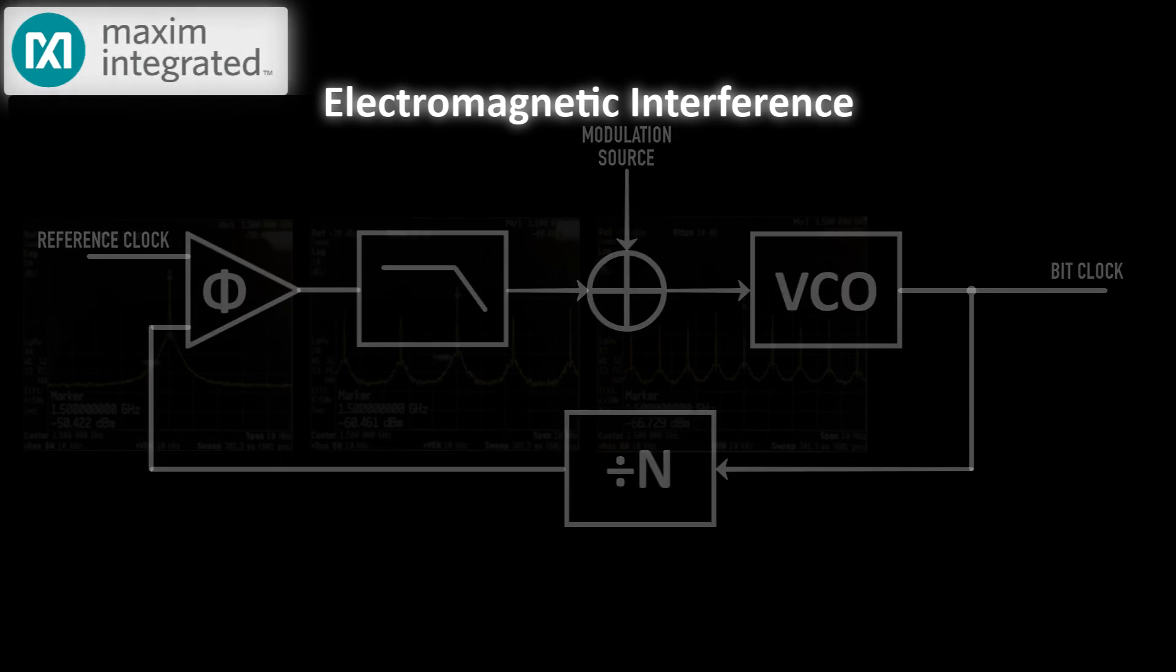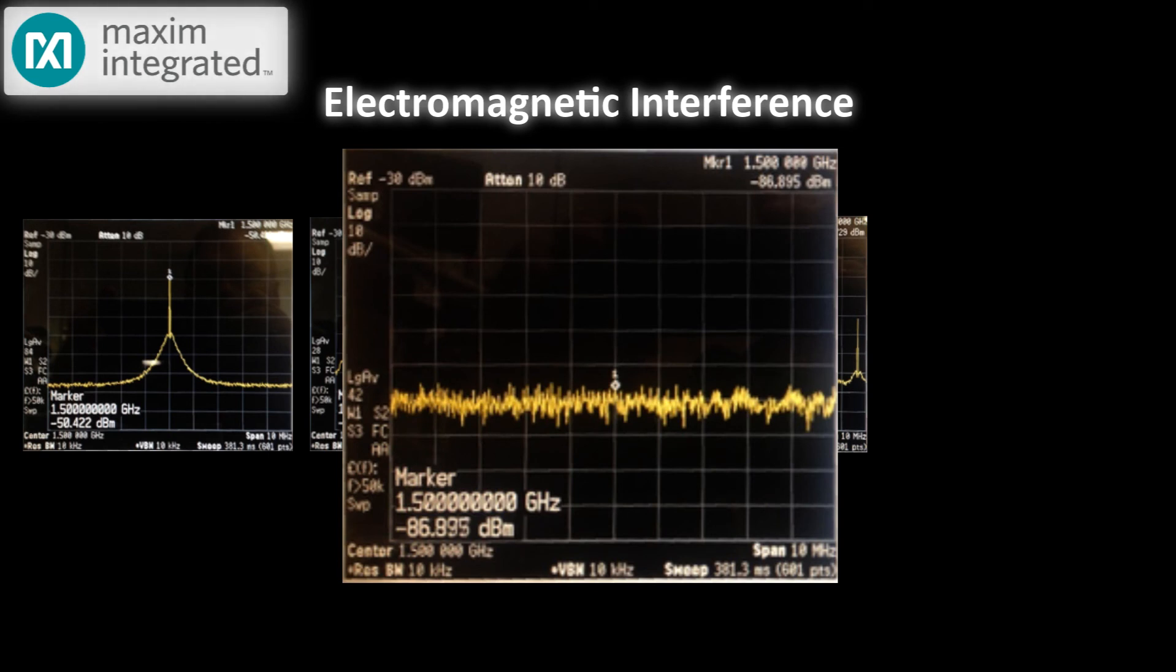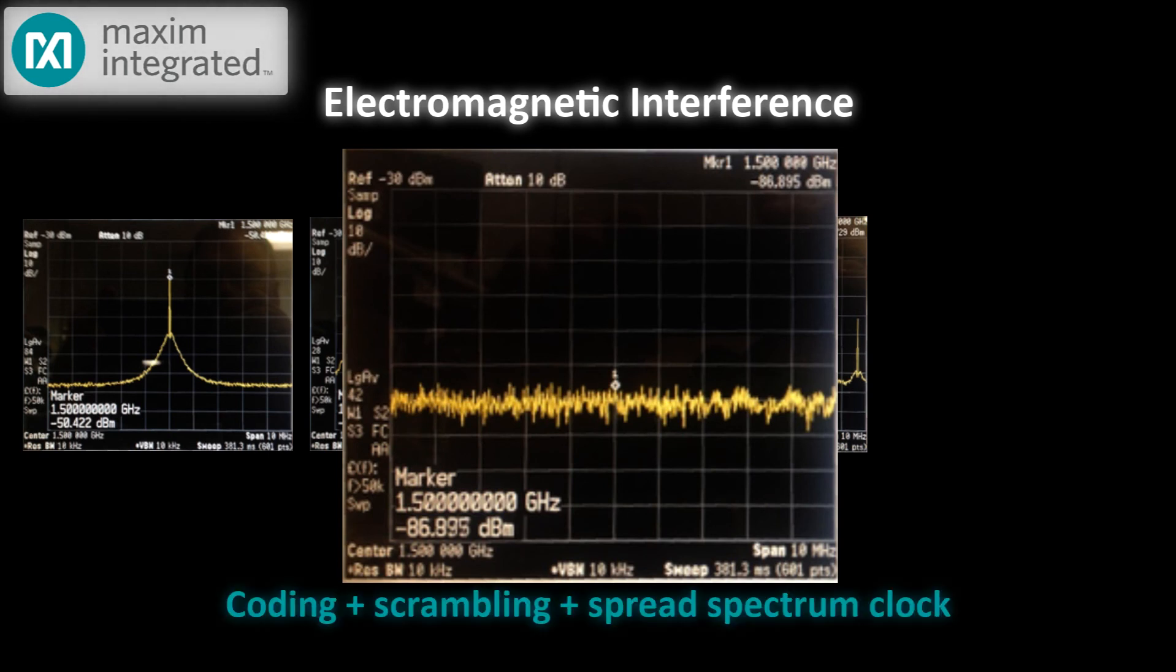When you apply this spread-spectrum modulation, just look what happens to the noise. Just a half percent of spread-spectrum modulation reduced the peak by just over 20 dBm.